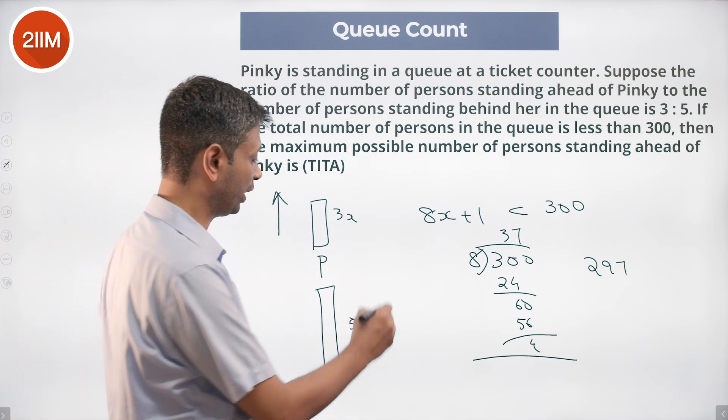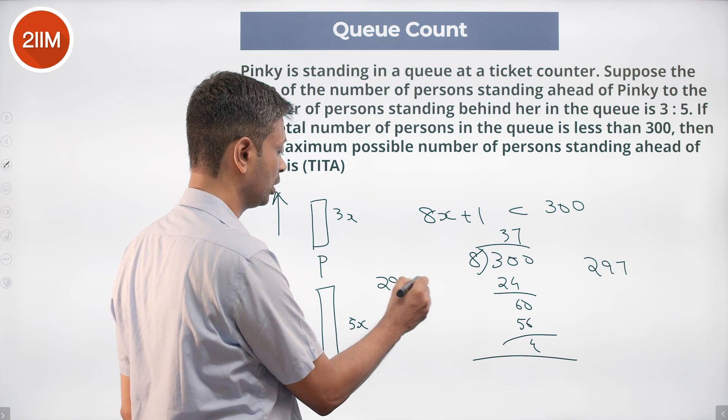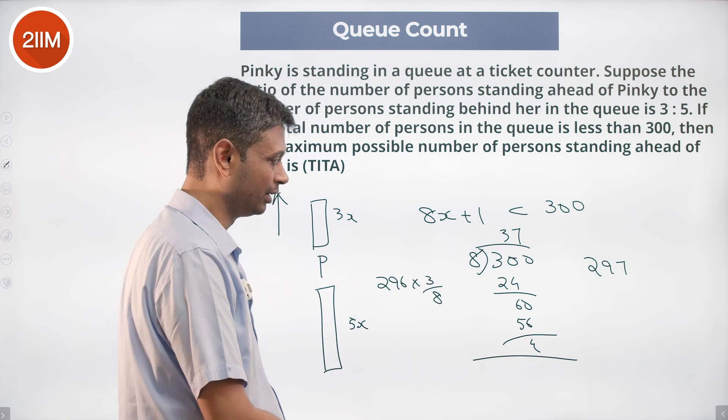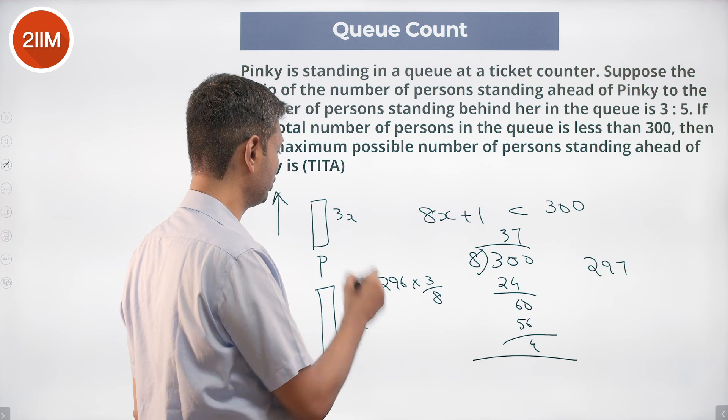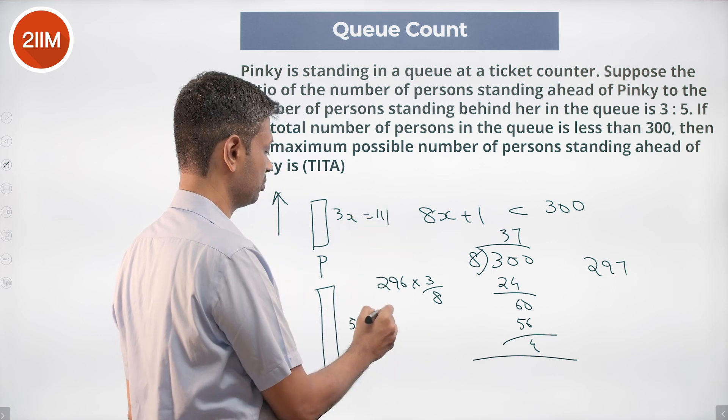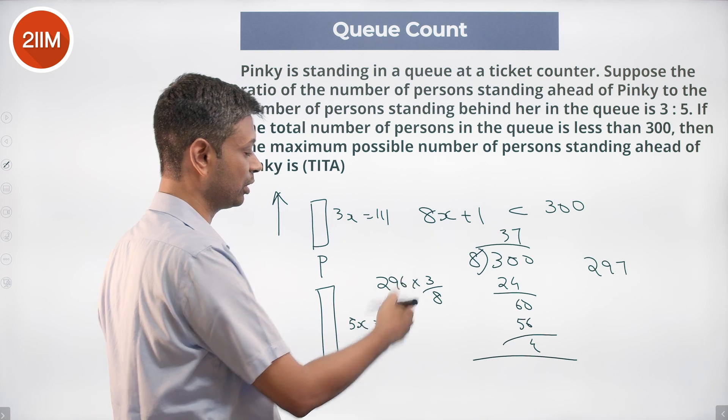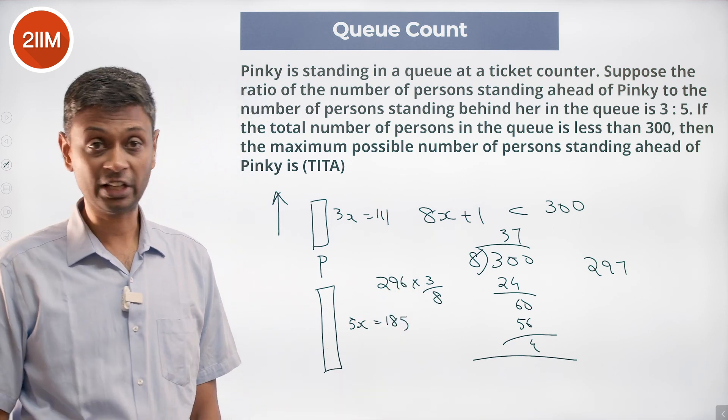In which case, 296 into 3 by 8, what this will be: 296 by 8 is 37, 37 into 3 is 111. Should be 185. Add to get 296 plus 1, 297. That works.